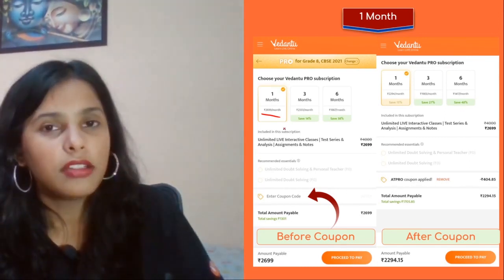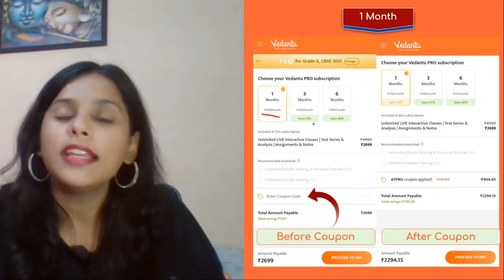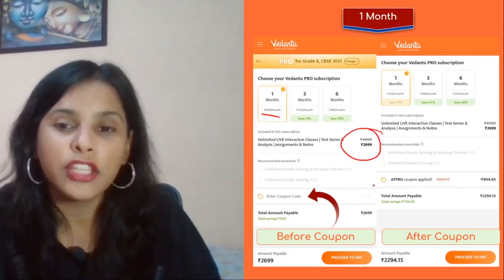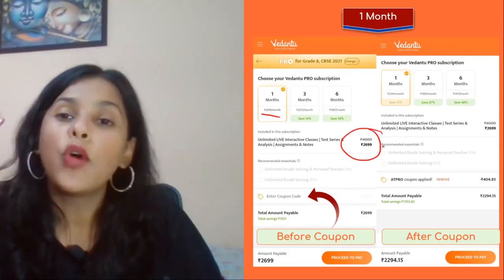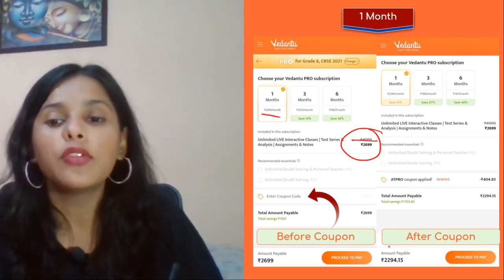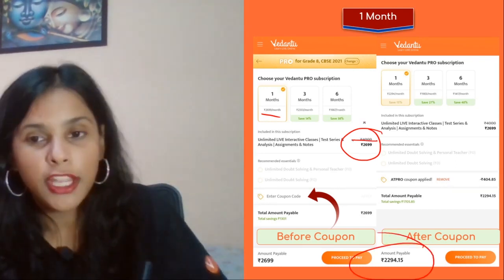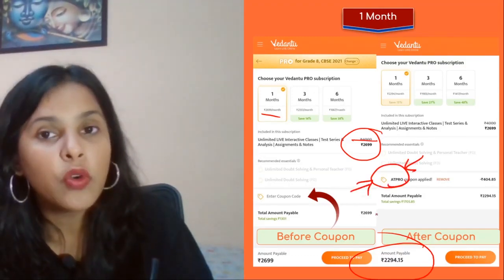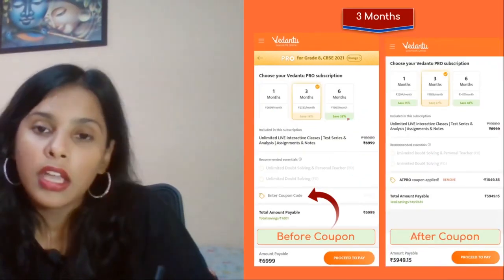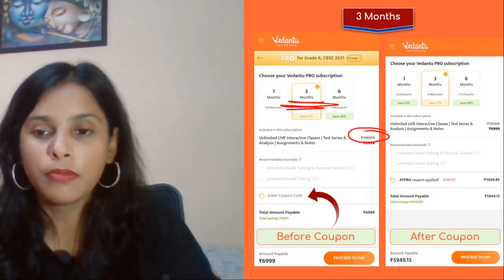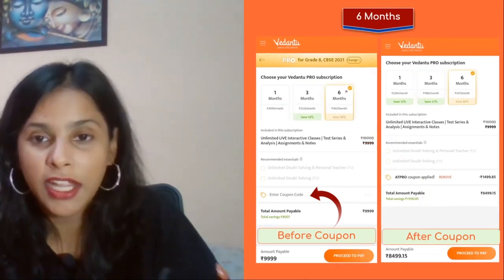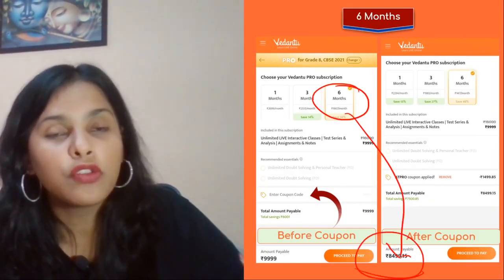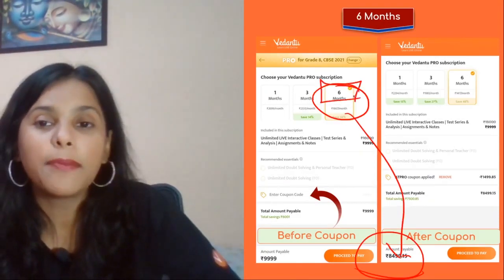We have three plans: one month, three months, and six months. The elements and components are not different, but the price is different. One month plan is four thousand rupees, but after discount you get it for 2,290 rupees. If you apply this coupon code, you get an instant discount.